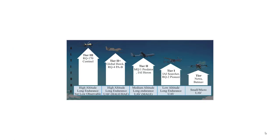Getting a little more into tiers: if you look on this slide, tier 2 is actually a Predator, tier 2-plus is a Global Hawk, and then tier 3 is the RQ-170, which is actually smaller than the Global Hawk. So it's like, wait a minute — which one is which? And then below that we get into small and micro UAVs, so we have low altitude long endurance, medium altitude long endurance (MALEs), and high altitude long endurance (HALEs), and you can see where this is getting confusing in the military.